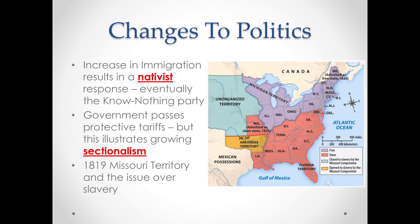Sectionalism also showed up in 1819 when the Missouri Territory wanted to become a state. Many who moved there came from Kentucky and brought their slaves, so whether Missouri would be admitted as a slave state or a free state became one of the first big issues around slavery that would eventually push the country down the road toward the Civil War.